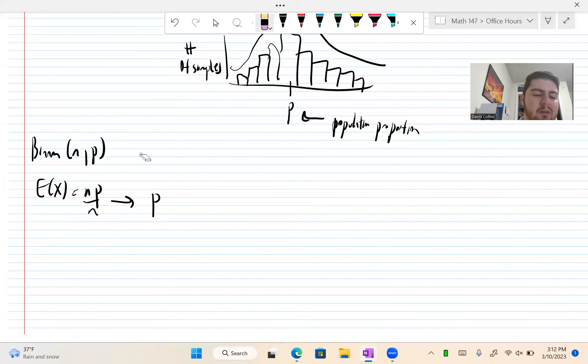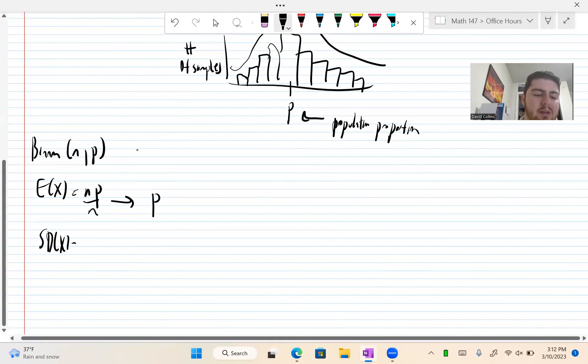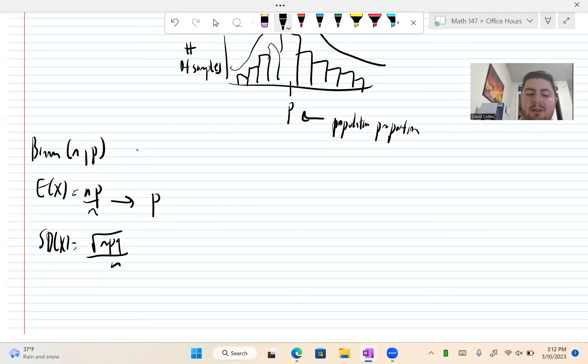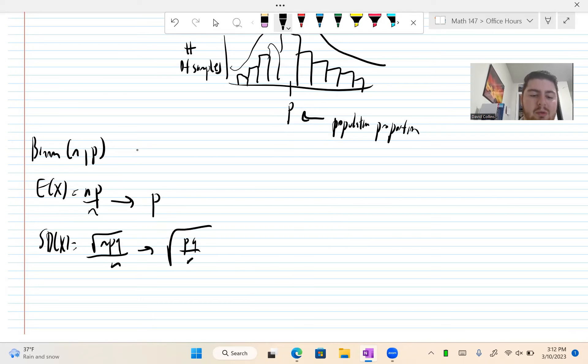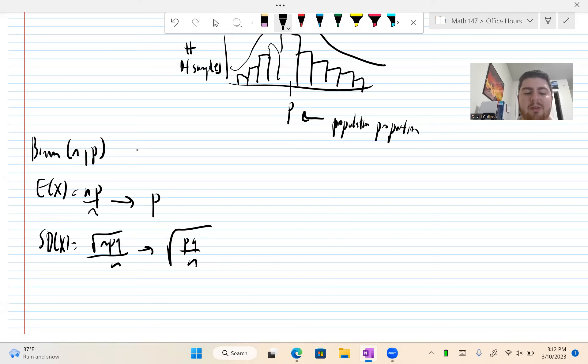Now we have the binomial distribution, binomial NP. We know the expected value of binomials N times P. But we got to divide by the sample size. So that means the mean or expected value of a sampling distribution is P, population proportion.